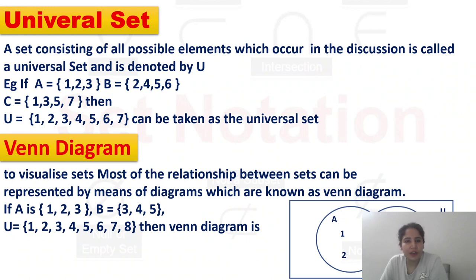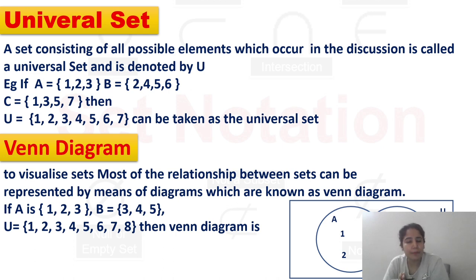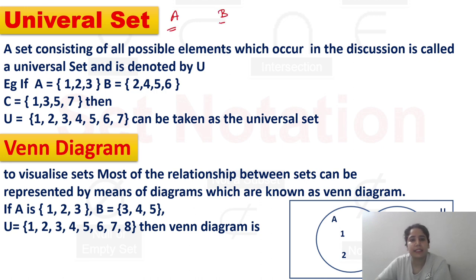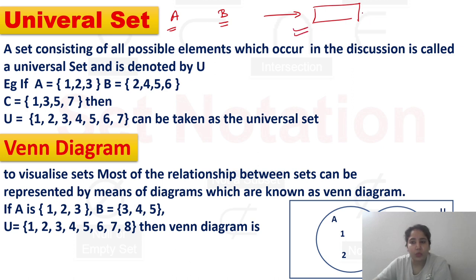Hello, welcome to Vishnu Economic School. Today we are going to discuss regarding Universal Set. What is the Universal Set? We will say that any set of any possible outcome we are discussing. The Universal Set is nothing but all the possible elements which are occurring in the discussion. So, we can consider that element in the Universal Set.